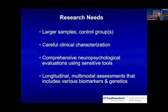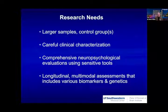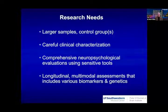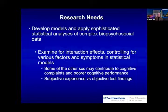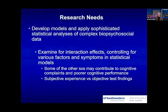The needs moving forward include larger samples and multiple control groups — very importantly with an S on control groups. These require very careful clinical characterization and comprehensive neuropsychological evaluation using sensitive tools. We need actual test scores to be reported so that studies can be replicated and built upon as this literature grows. Longitudinal measurements would also be very helpful, in addition to looking at biomarkers and genetic factors. We need to develop models and apply sophisticated statistical analyses of these complex biosocial syndromes, and look for interaction effects and control for relevant factors.